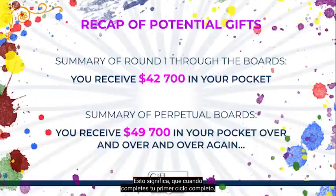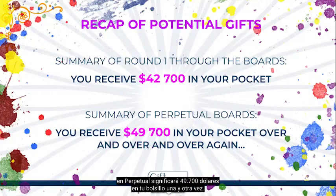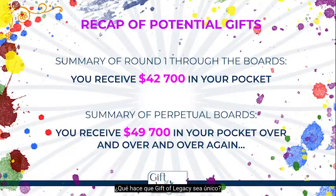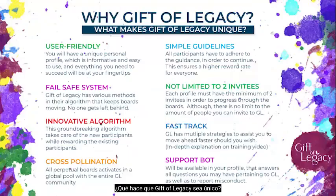This means that when you complete your full first cycle you will have $42,700 in gifts in your pocket, and a full cycle on perpetual will mean $49,700 in your pocket over and over again. So what makes Gift of Legacy unique?